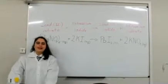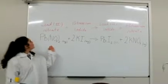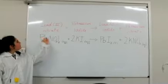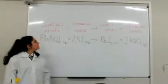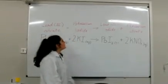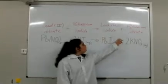The following balanced chemical equation shows the reaction between lead nitrate and potassium iodide. This gives the yellow precipitate lead iodide and potassium nitrate.